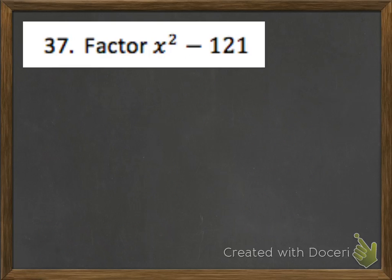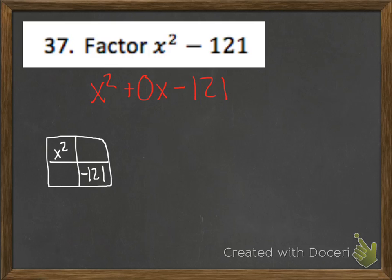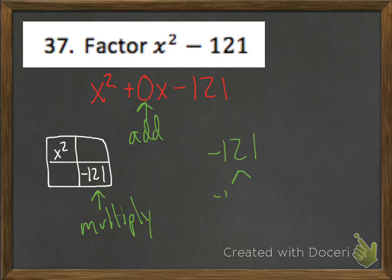Problem 37 wants us to factor x squared minus 121. This is not a trinomial, so the first thing we want to do is write it as a trinomial. If it's x squared plus 0x minus 121, we can go ahead and use the box method. x squared goes in the top left, negative 121 in the bottom right, and I want two numbers that multiply to negative 121 and add to 0.